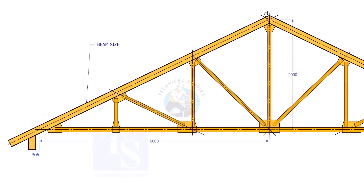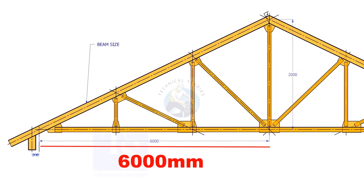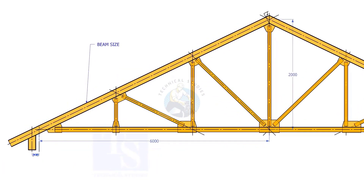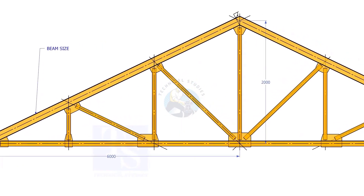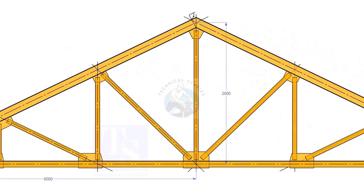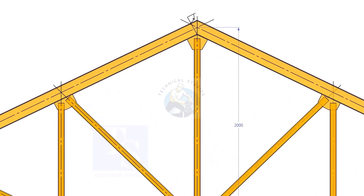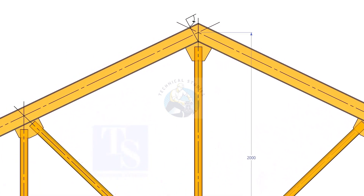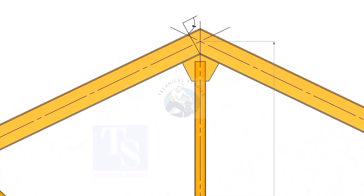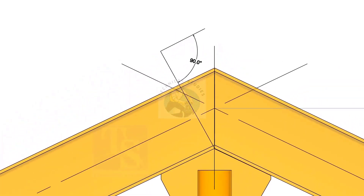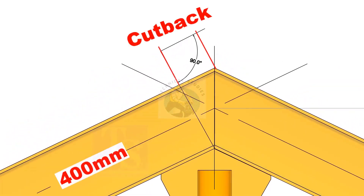Assume that the half span of a truss is 6000mm and the height of the truss is 2000mm. How to calculate the cutback of a 400mm wide girder?